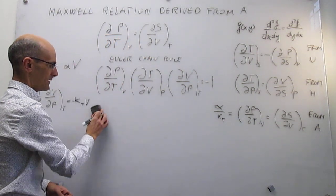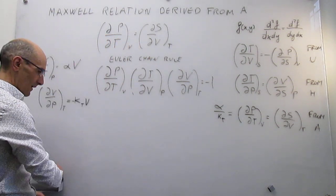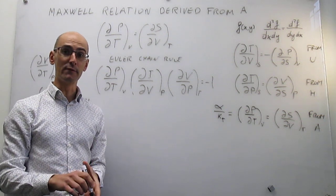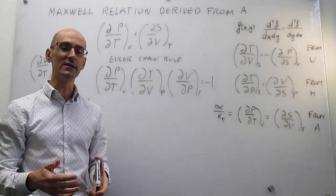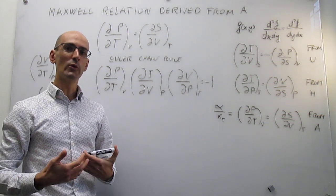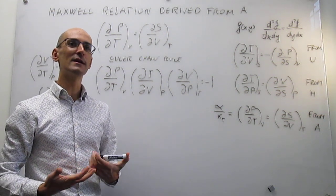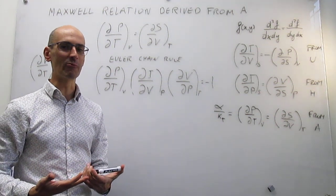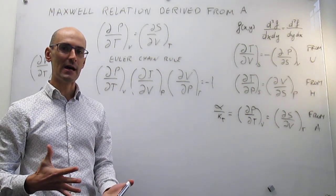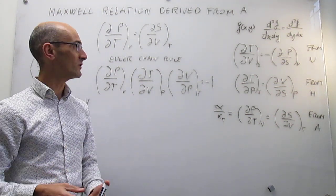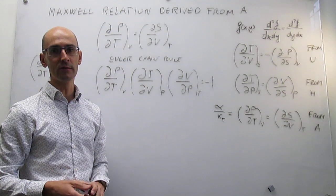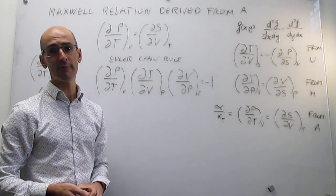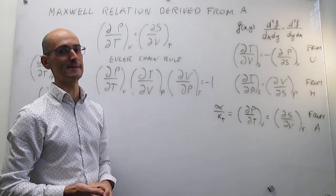This has been an addendum to the Maxwell relation for the Helmholtz energy, where we have begun to see the usefulness of these Maxwell relations. In the next video, we are going to look at the Maxwell relation obtained from the Gibbs energy.